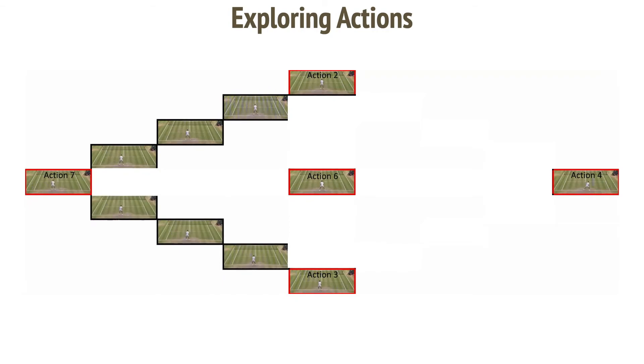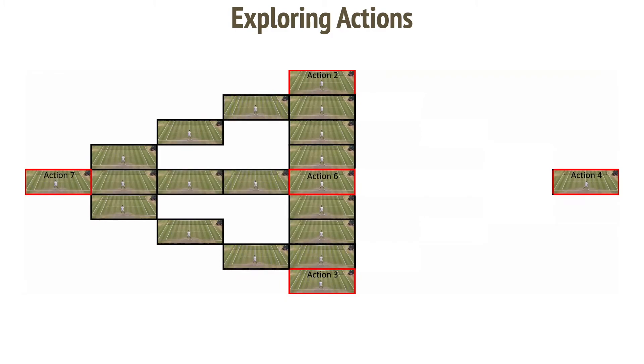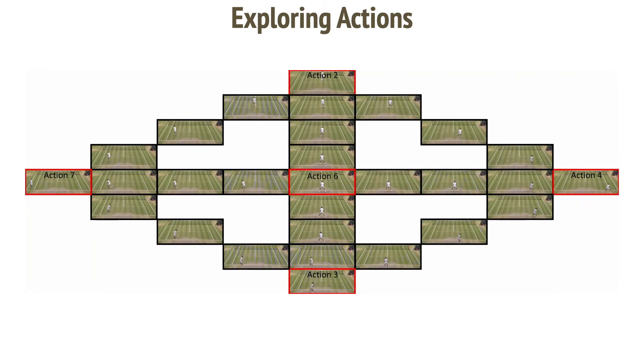We observe a similar behavior as we interpolate between different action pairs. For example, action 6 is staying in the same place. When we move the centroid toward that action, we observe that the action speed reduces.